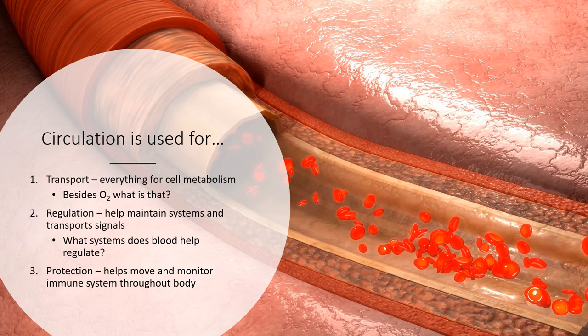Blood is also important for transporting signals. For instance, an injection of testosterone enters circulation and is moved around the body, informing other cells about what they should be doing. Finally, blood and circulation are critical for protection. Blood gets very close to almost everywhere in the body, transporting leukocytes to nearly every location — excepting areas like the nervous system, where a blood-brain barrier restricts access. We'll discuss that more in the nervous system lecture.